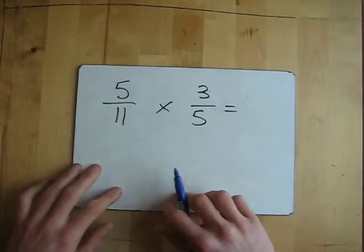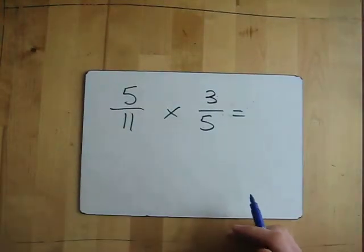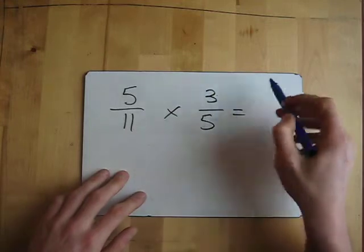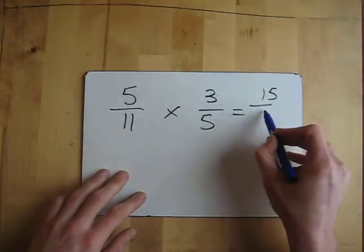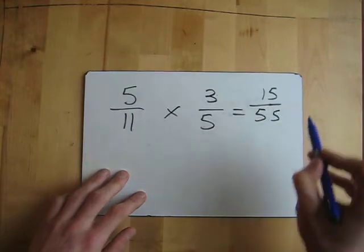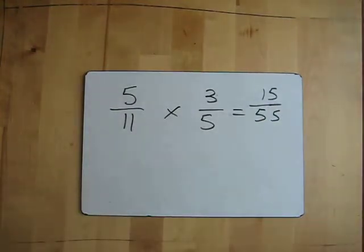Let's try another one. We've got five elevenths times three fifths. So we just go five times three, fifteen. Eleven times five, fifty-five. So my answer is fifteen over fifty-five.